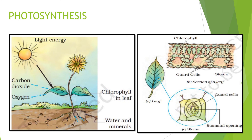During photosynthesis, oxygen is released. The presence of starch in leaves indicates the occurrence of photosynthesis — starch is also a carbohydrate. Food is made in the form of starch in plants, and carbohydrate and starch are stored in plants.